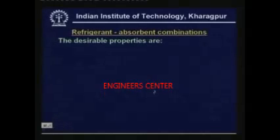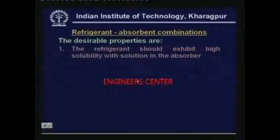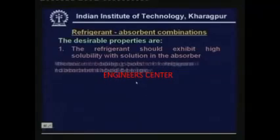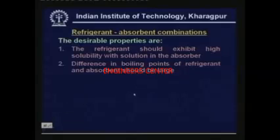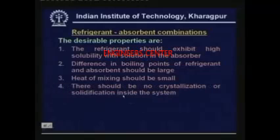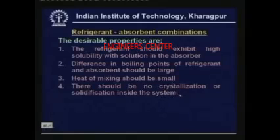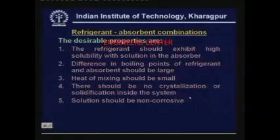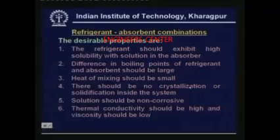The desirable properties for refrigerant-absorbent combinations are: the refrigerant should exhibit high solubility in the absorber; the difference in boiling points should be large so that only the refrigerant boils in the generator; heat of mixing should be small — though points 1 and 3 are contradictory; there should be no crystallization or solidification inside the system; the solution should be non-corrosive; and it should exhibit good transport properties, meaning high thermal conductivity and low viscosity.